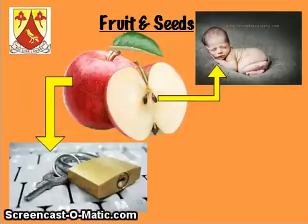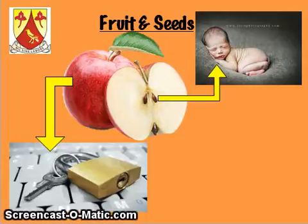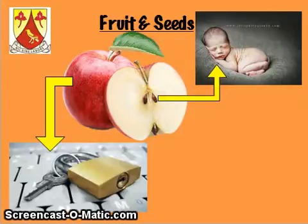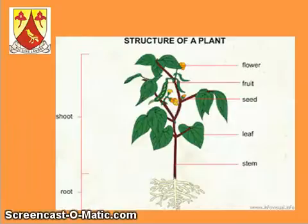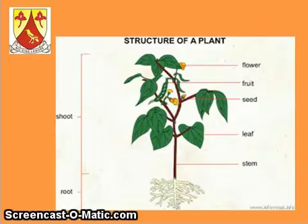Next we're looking at the fruit and the seeds. The fruit forms around a seed and it protects the seed — it locks the seed in and keeps it from harm until it's ready to be planted. Imagine that the fruit is locked around the seed to protect it. And then the seed is like a little baby, because the seed is basically the new plant that can be planted — it's the part of a flowering plant that grows into a new plant. So when we think of the structure of a plant: the root is the anchor; the stem is the highway where all the nutrients travel and everything is attached; the leaf is the factory that makes all the food; the flower is the whistle to attract insects to help it reproduce; the fruit is like a lock protecting the seed; and the seed is like a little baby, because it's going to help us create a new plant.